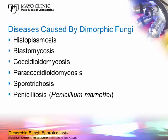The diseases caused by the dimorphic fungi are histoplasmosis, blastomycosis, coccidioidomycosis, paracoccidioidomycosis, sporotrichosis, and penicillosis. Histoplasmosis, blastomycosis, coccidioidomycosis, and sporotrichosis are found in North America. The other two are not. Paracoccidioidomycosis is found in Central and South America, and penicillosis is found in places like Vietnam, Cambodia, and Thailand.